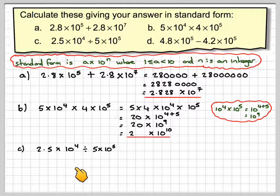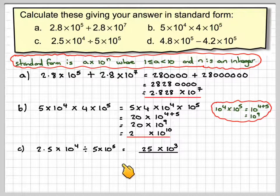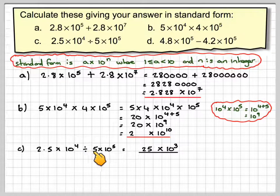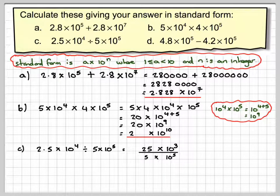2.5 times 10 to the 4 divided by 5 times 10 to the 5. I'm going to rewrite it as the top one as 25 times 10 cubed, so we'll move the decimal point here one place. And because it's division, we're going to put it as a fraction, so the one underneath we're going to put here. So we're going to get 5 times 10 to the 5.